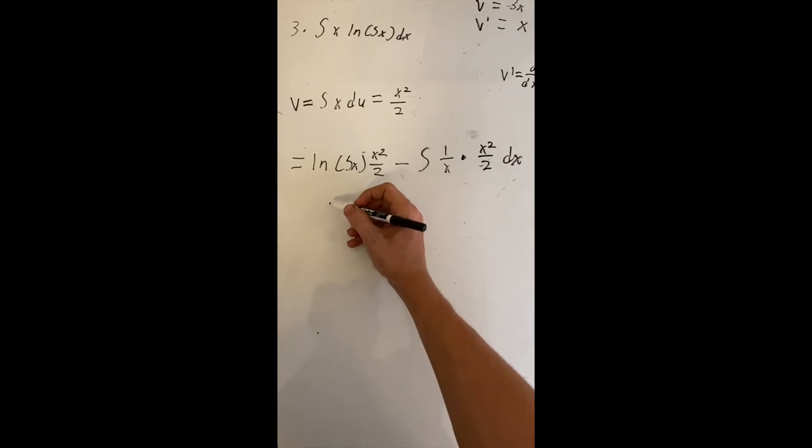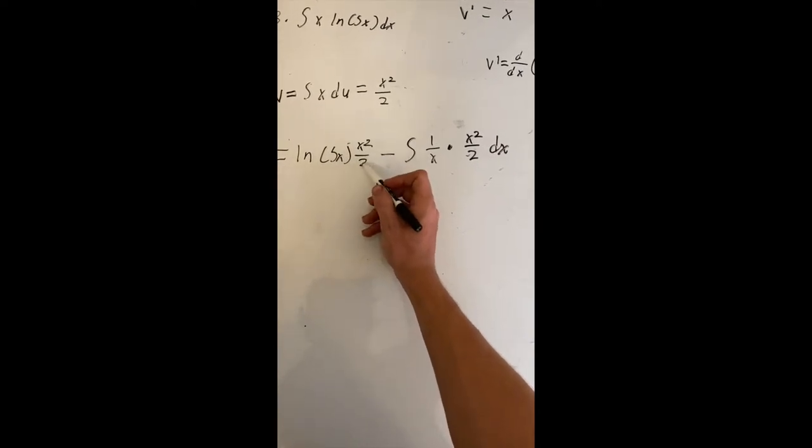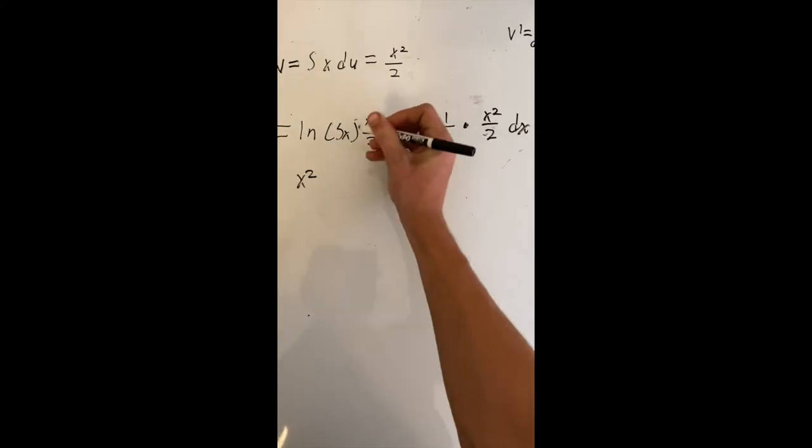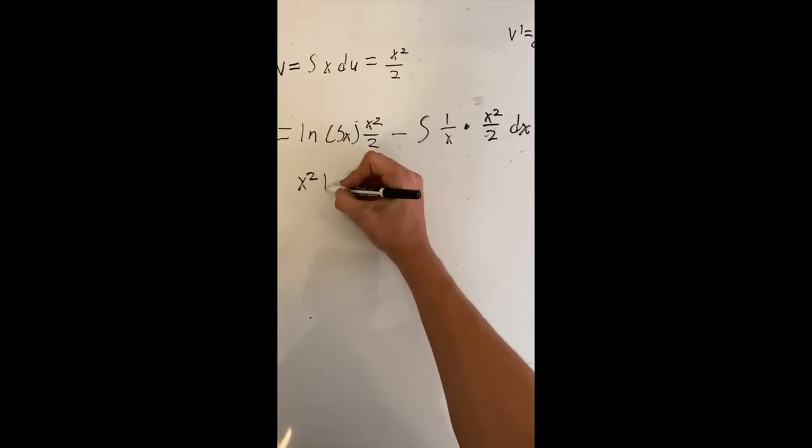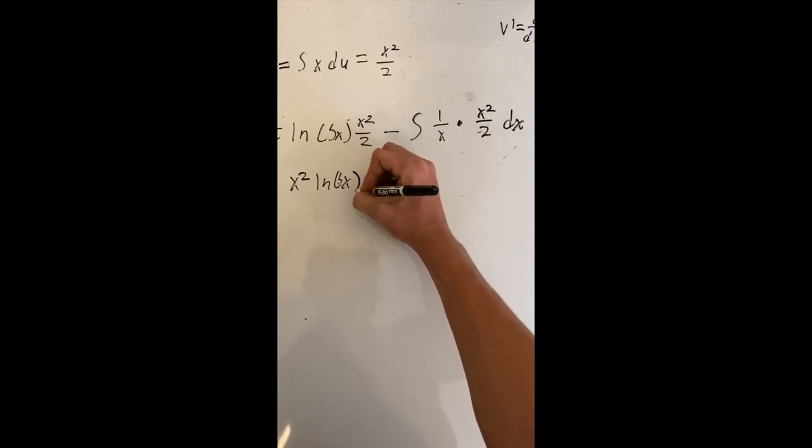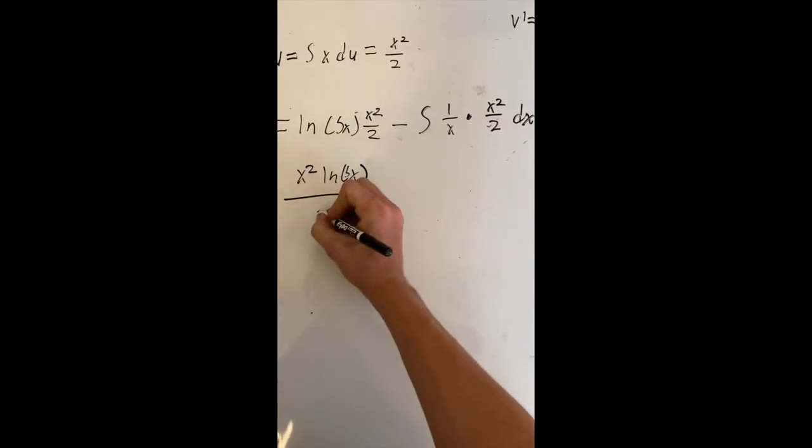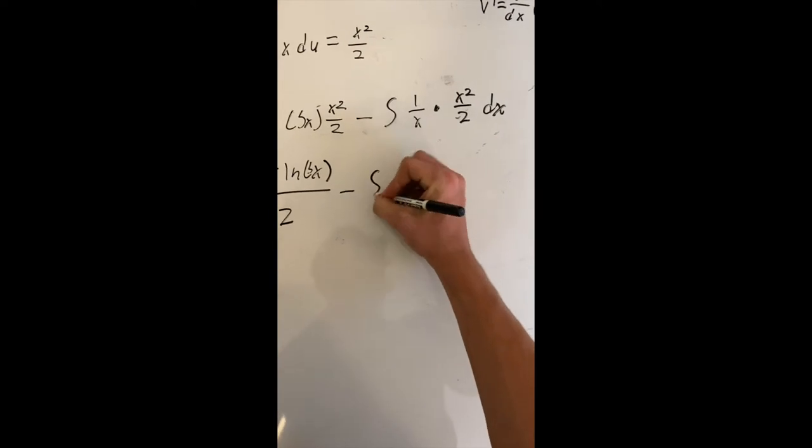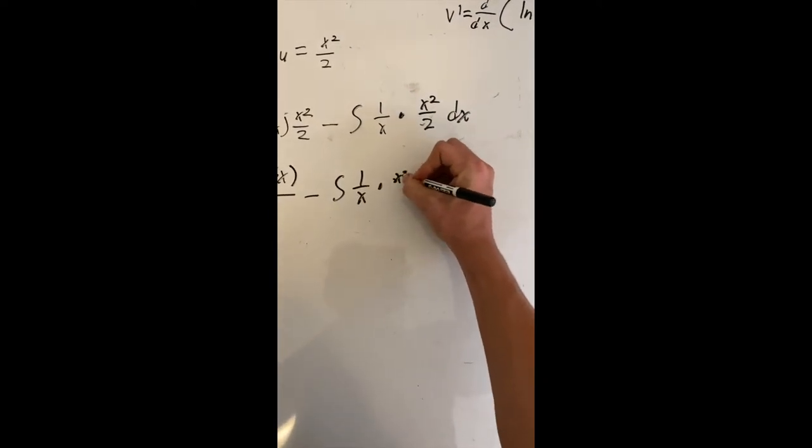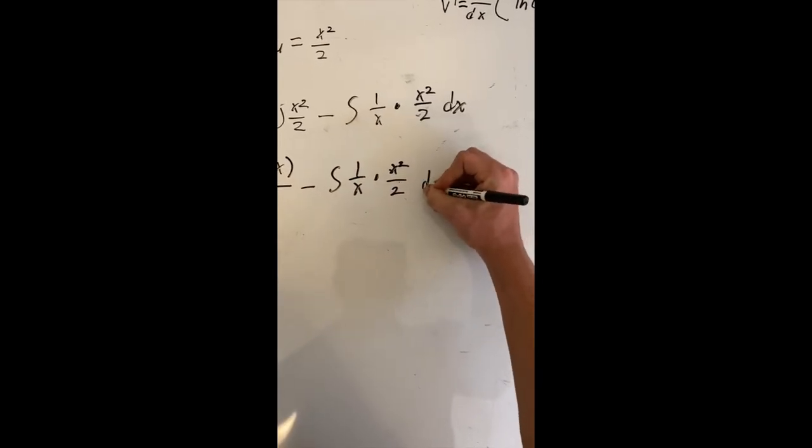So the easiest way to simplify is that I want to have x squared, this all be one fraction. So it's going to be x squared ln 5x divided by 2. And I'm going to subtract the integral of 1 divided by x multiplied by x squared divided by 2 dx.